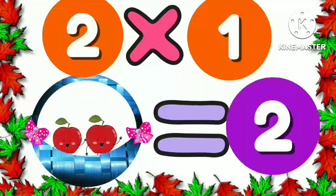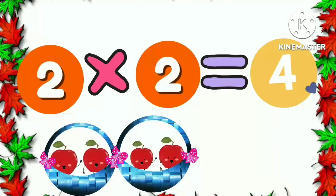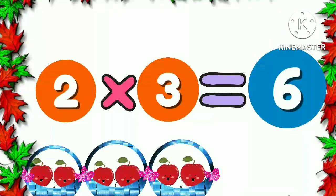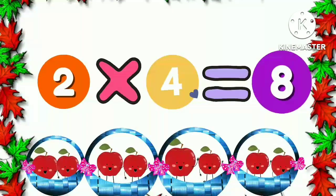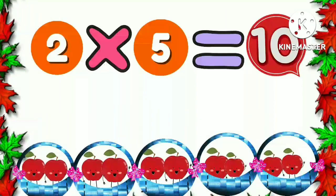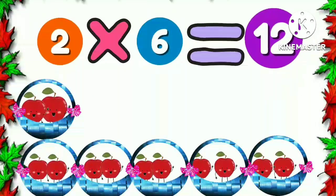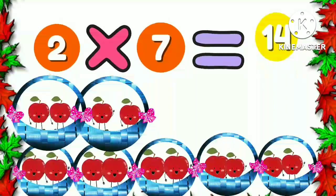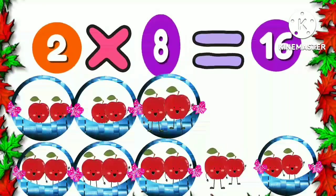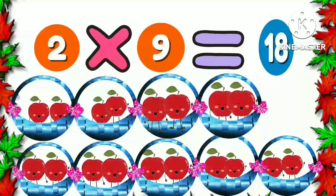Two one times two. Two two times four. Two three times six. Two four times eight. Two five times ten. Two six times twelve. Two seven times fourteen. Two eight times sixteen. Two nine times eighteen.